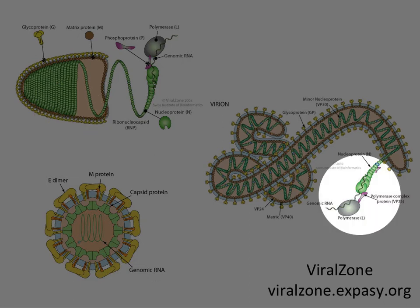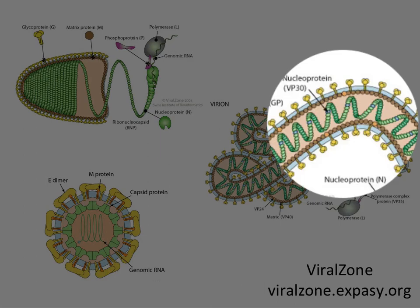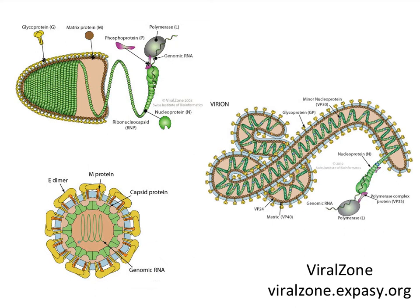Ebola virus on the right is a similar structure, except it's filamentous. These are so-called filoviruses — from the Greek word for thread — because they have this thread-like appearance. They're nothing more than a nucleocapsid: RNA and protein, with the protein subunits coiled up inside an envelope, which in this case happens to be elongated. So these are two examples of helical nucleocapsids that can be enveloped.